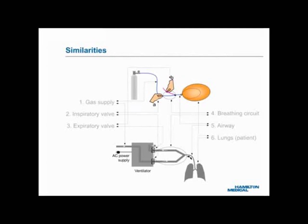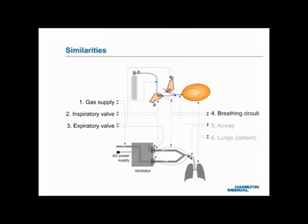The balloon model is highly comparable to a real ventilator system. One: the cylinder in the model corresponds to the high-pressure gas supply; a ventilator system needs high-pressure oxygen and high-pressure air. Two: Hand A corresponds to the inspiratory valve. Three: Hand B corresponds to the expiratory valve. Four: the blue and pink tubes between the Y piece and the two hands correspond to a breathing circuit. Five: the blue tube piece between the Y piece and the balloon corresponds to the airway. Six: the balloon corresponds to the lungs of a ventilated patient.